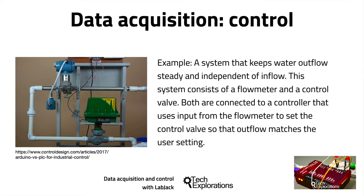Here's an example from an experiment on the controldesign.com website that compared an Arduino and an industrial PLC control system. The setup is a typical closed-loop control system that contains a water flow sensor and a water flow valve. The water that enters the system from the outside world comes in at a variable rate. The control system's job is to ensure that the water coming out has a specific flow set by the user, achieved by measuring flow with a flow meter and using a control valve to match the user-set value.